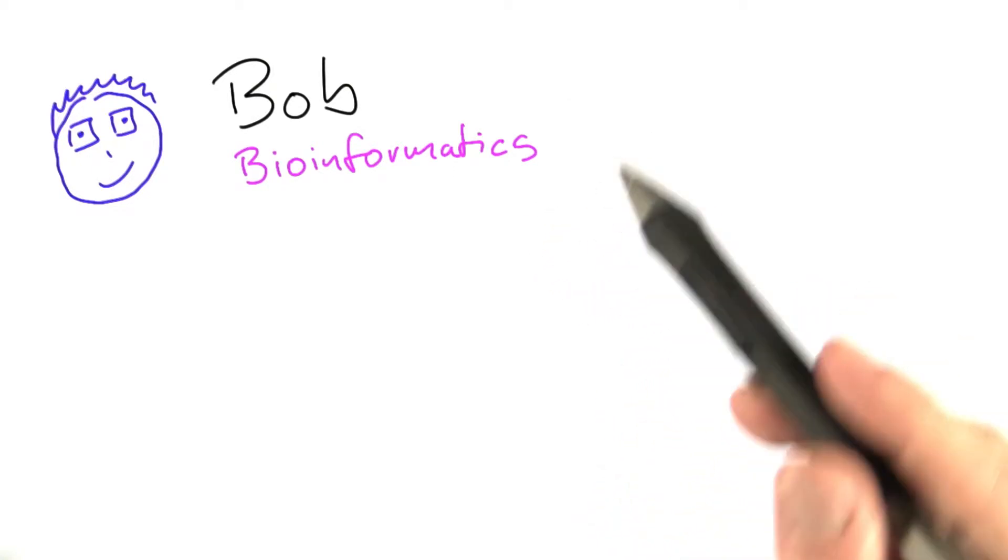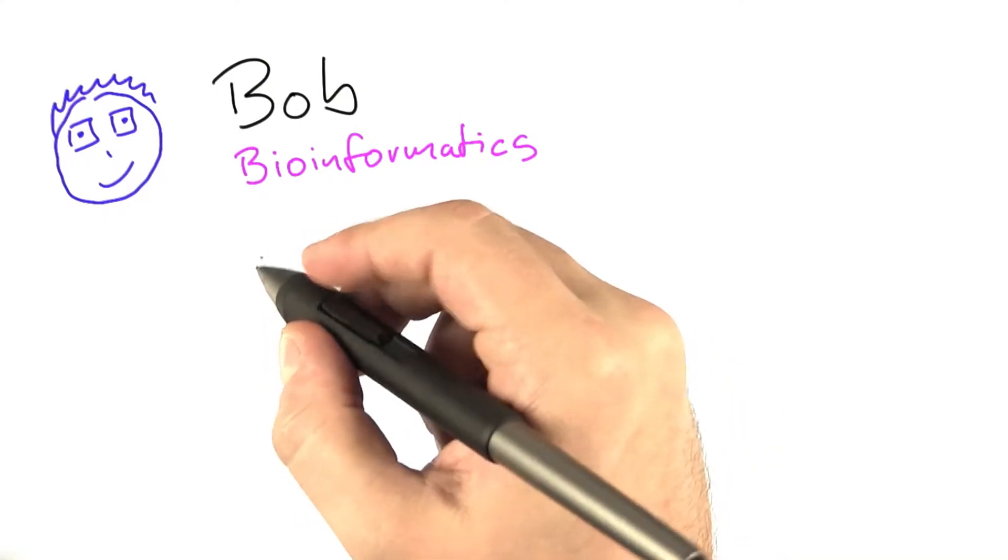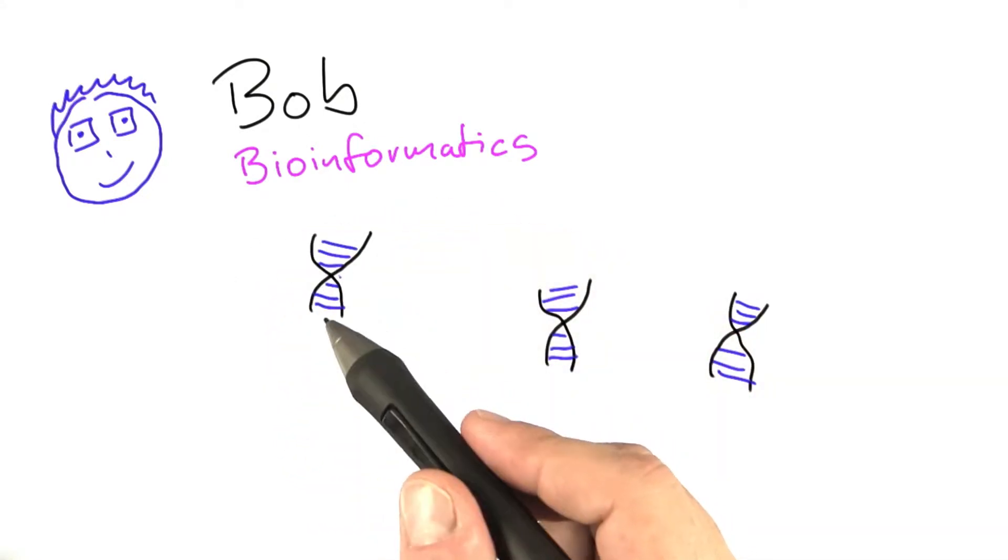And the problem that Bob is working on is he's doing gene analysis. So he's looking at a bunch of different genes, such as this one here.